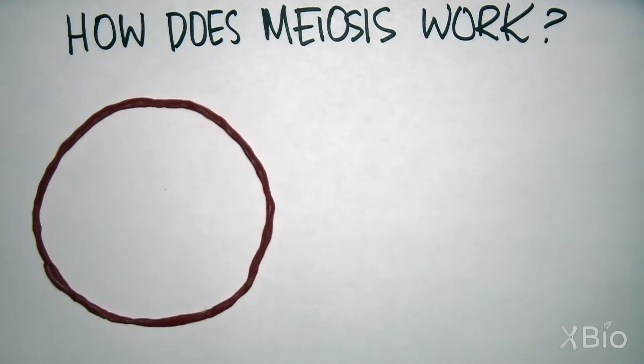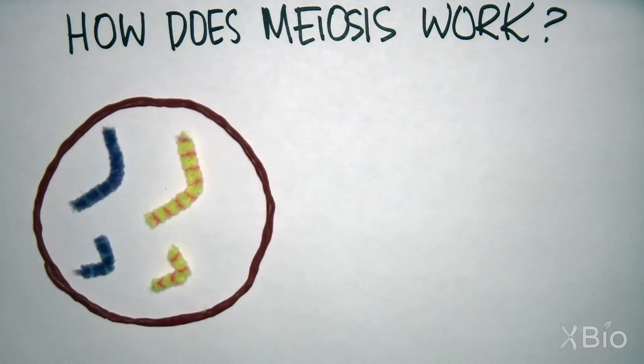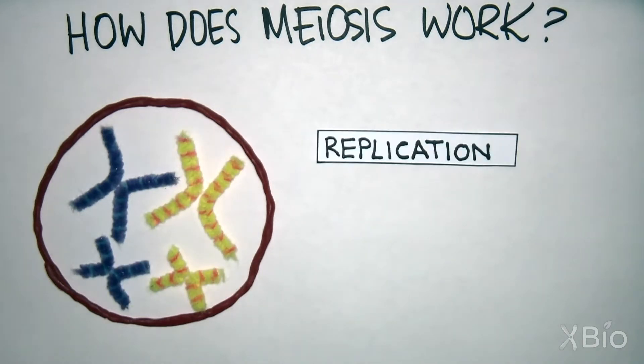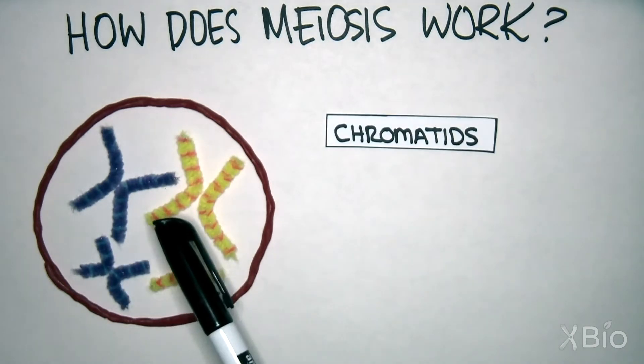Meiosis starts with a cell that contains two copies of every chromosome. Each copy of the chromosome is replicated to double the number of chromosomes. Each identical copy is called a chromatid.